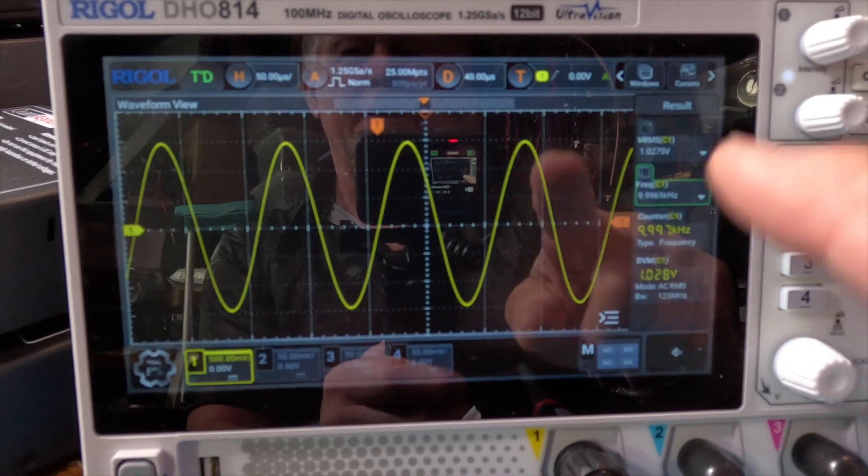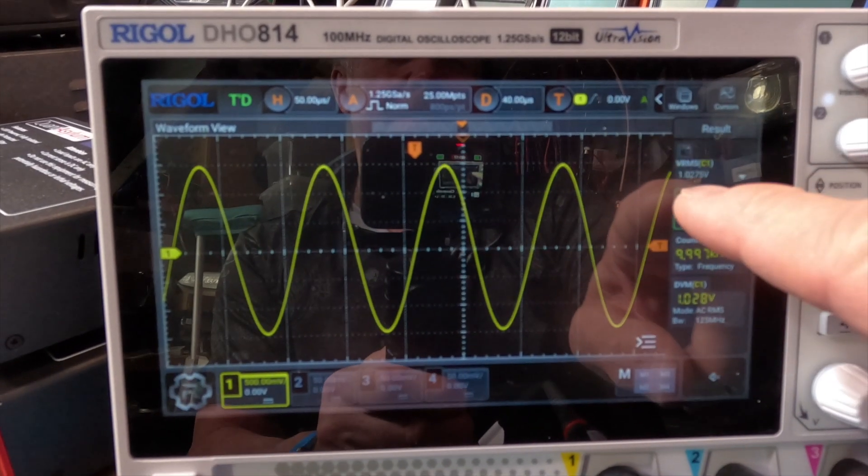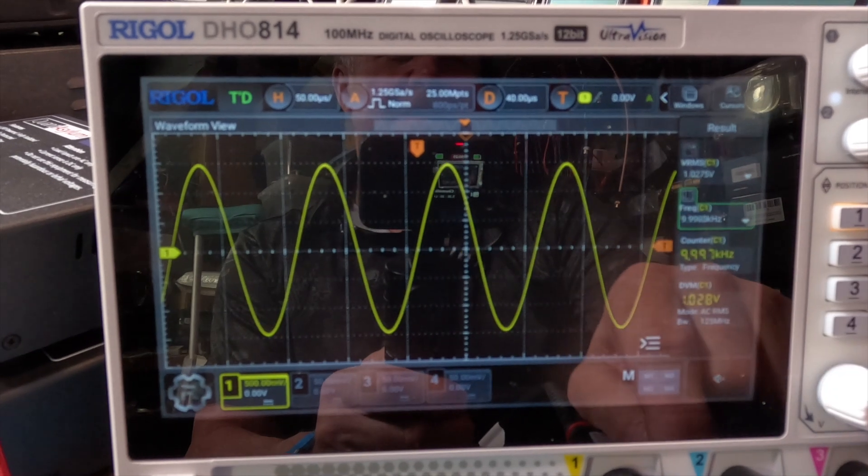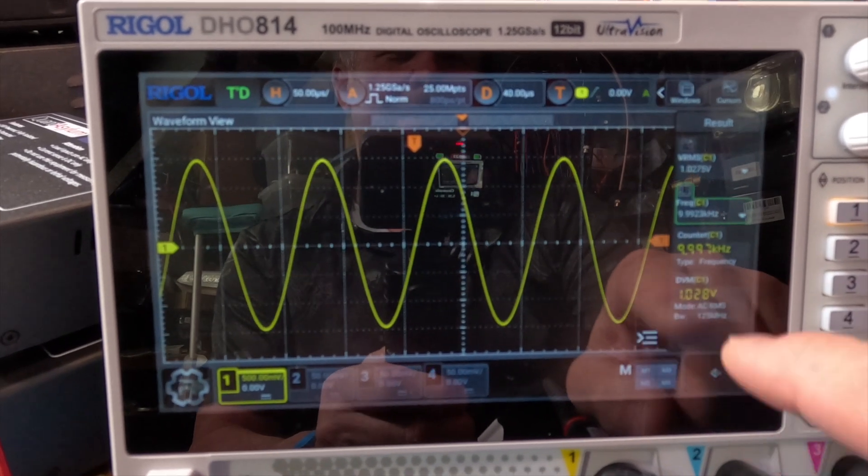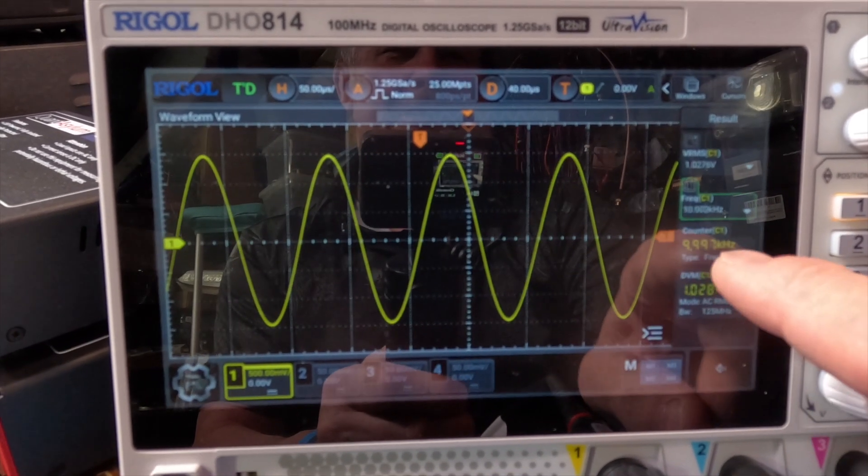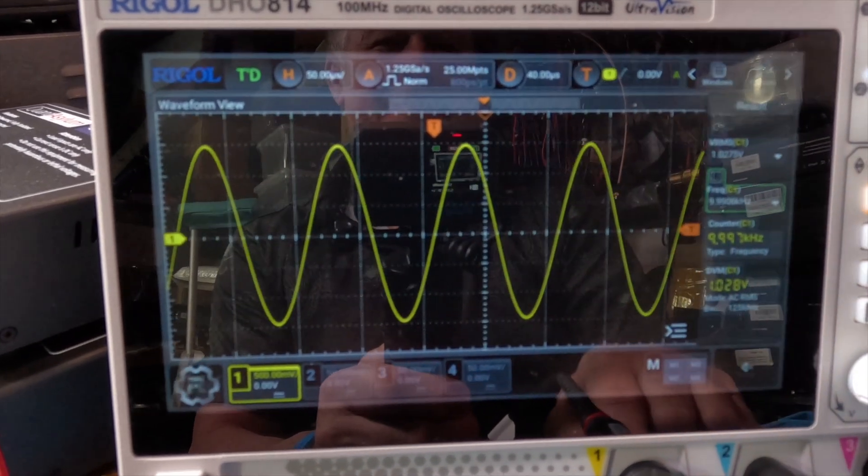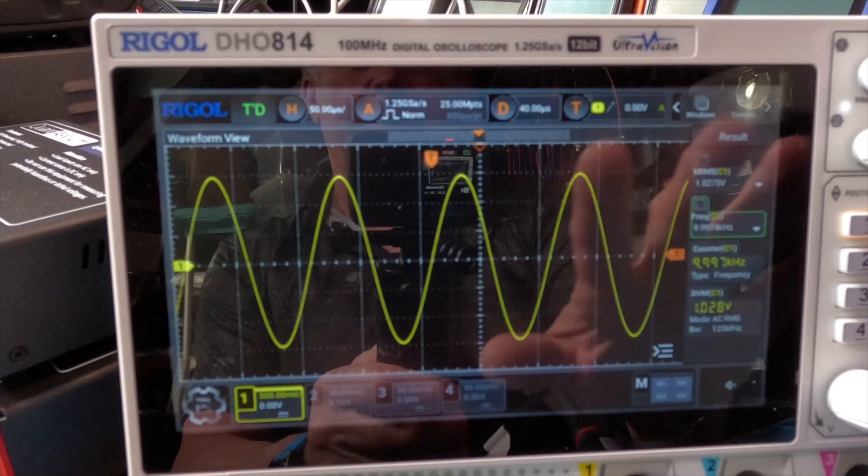Alright guys, this is a Rigol. So I'm taking a measurement, it says 1.02 volts and 10k, and then I've got the counter up and it's just around 10k, pretty locked on. And the DVM is up too just so you can see a bunch of different readings. Sorry about the glare, this is a really shiny screen.